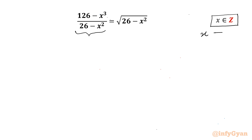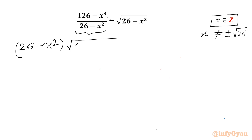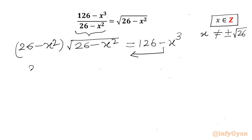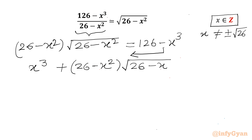So x cannot be equal to plus or minus square root of 26. Now I will cross multiply. So 26 minus x² times the square root of 26 minus x² equals 126 minus x³. Let us take this negative x³ to the LHS, so x³ plus (26 minus x²) times the square root of (26 minus x²) equals 126.